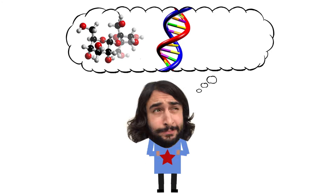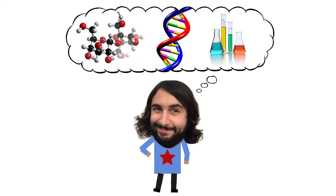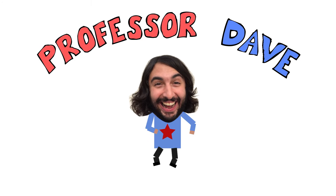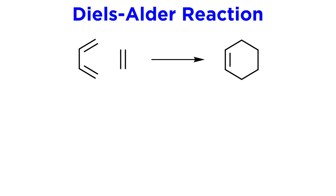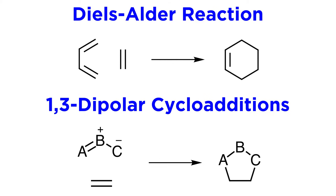For the past few tutorials we have been examining cycloaddition reactions, such as the Diels-Alder reaction. These involve the formation of six-membered rings, or five-membered rings in the case of 1,3-dipolar cycloadditions.